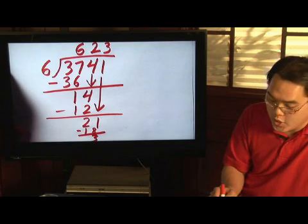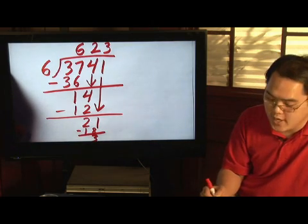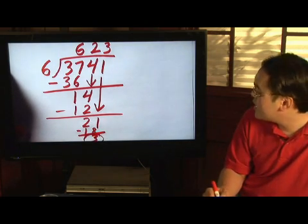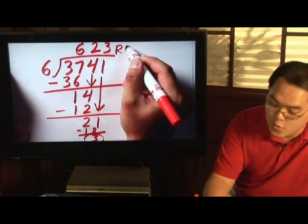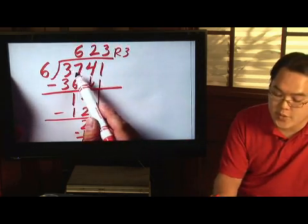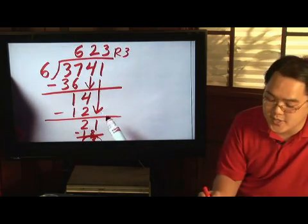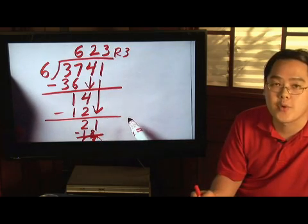Now, since 6 does not go into 3, and there's no more numbers to bring down, this 3 down here is going to be your remainder. So, 3,741 divided by 6 is going to be 623, remainder 3.